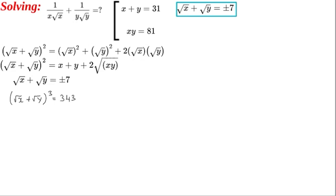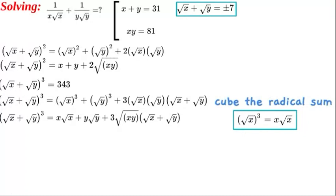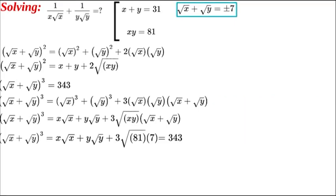We also know that (√x plus √y) cubed expands to √x cubed plus √y cubed plus 3 times √x times √y times the sum of (√x plus √y). Simplifying the cubes, √x cubed becomes x√x and √y cubed becomes y√y. We can now substitute our known values: replacing (√x plus √y) cubed with 343 and using √(xy) equals 9 and √x plus √y equals 7.